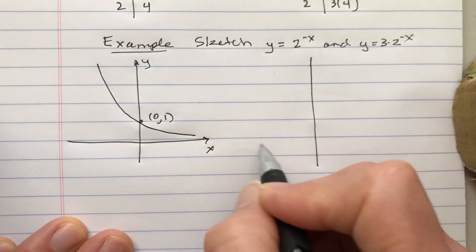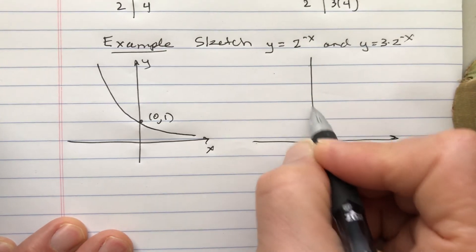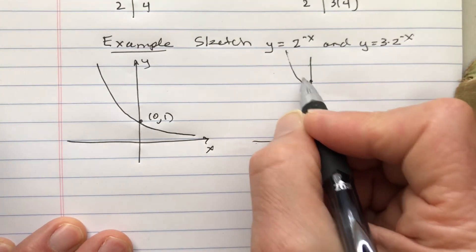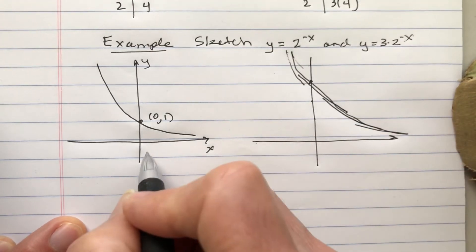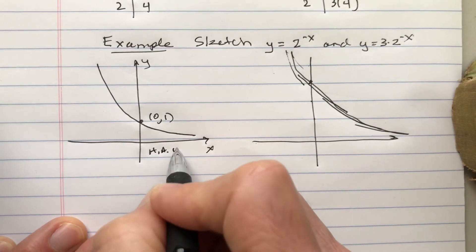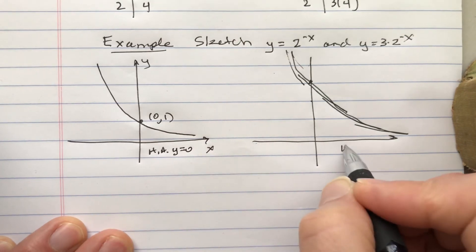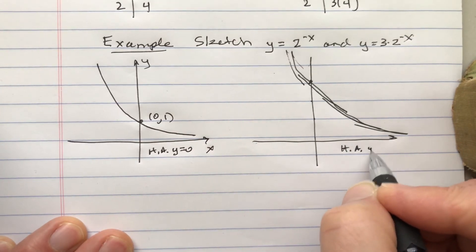Multiply by 3. What happens to this? Looks very similar. Here we have the horizontal asymptote y equals 0. Multiply 0 by 3 and we get horizontal asymptote y equals 0.